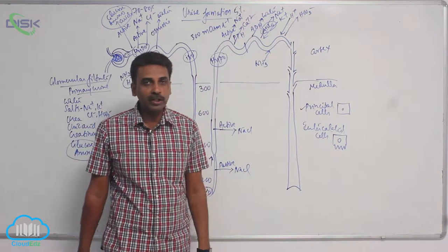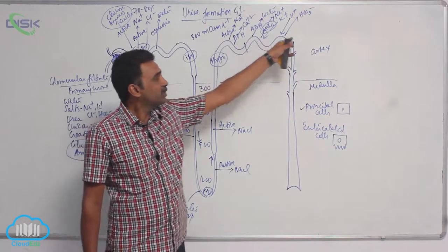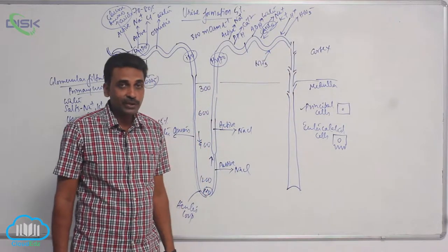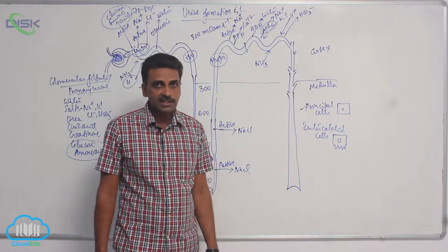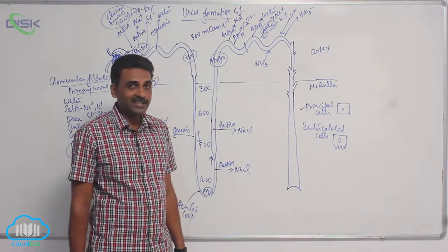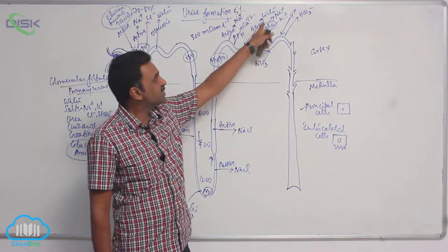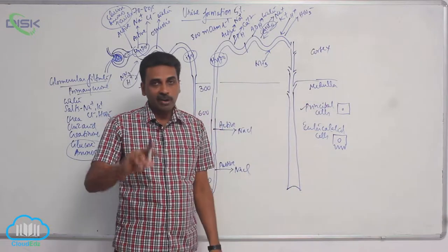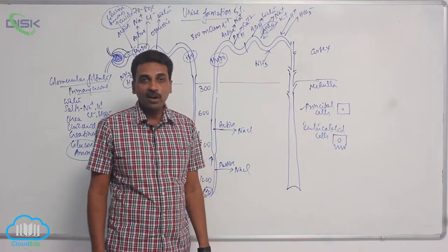When you come to the second half of the distal convoluted tubule, we have two different types of cells: the principal cells and intercalated cells. Principal cells have receptors for ADH (antidiuretic hormone) and aldosterone.